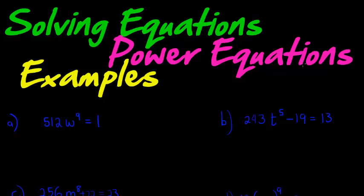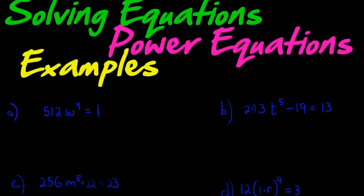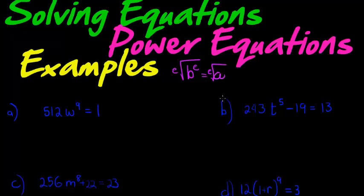I'm going to look at some examples of solving power equations. We've already looked at how to do that. All we need to do is get my power, which is my base to an exponent, equal to my answer, and then I take the root on both sides. If the exponent is even, I put a plus minus in front of that root. So I need to get my power on its own.